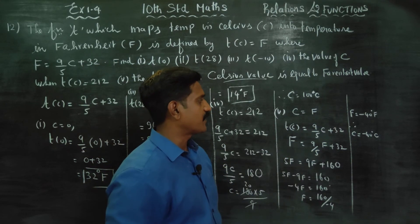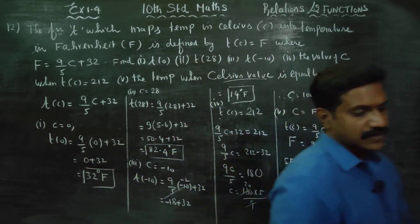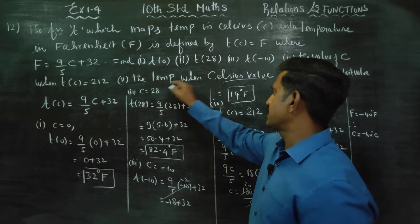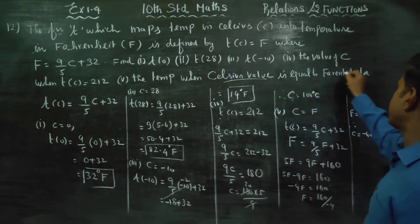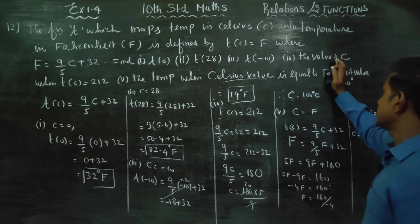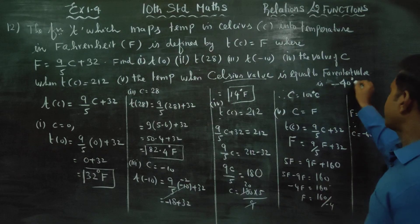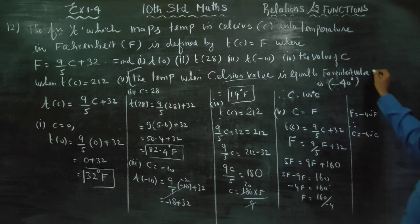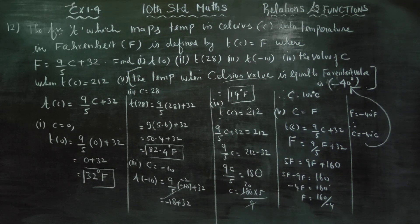So the answer is minus 40 degree Fahrenheit equals minus 40 degree Celsius. In wording: the temperature when the Celsius value is equal to the Fahrenheit value is minus 40 degrees. You can write this statement as your final answer. Thank you.